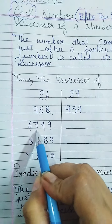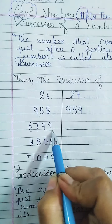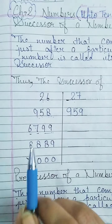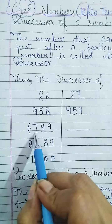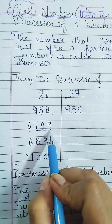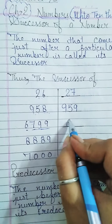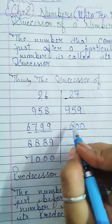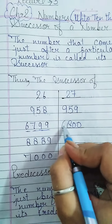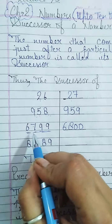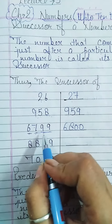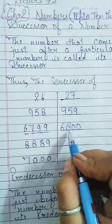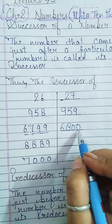Next example: 6,799. What will be its successor? We add 1 — the 99 becomes 800, and the 6 stays as it is. So the successor of 6,799 is 6,800.